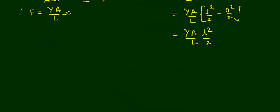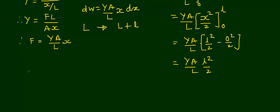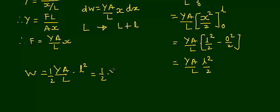We now rearrange this result. W = (1/2) · (YAl²/L). We can rewrite this by introducing L in both numerator and denominator: W = (1/2) · (Yl/L) · (l/L) · (A·L), multiplying by L/L to separate the terms.